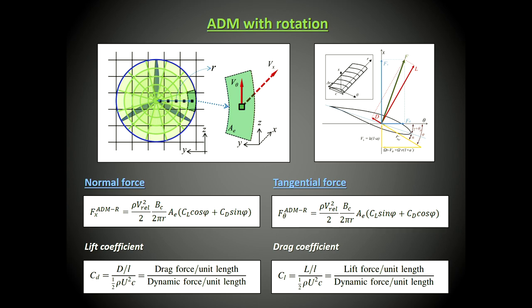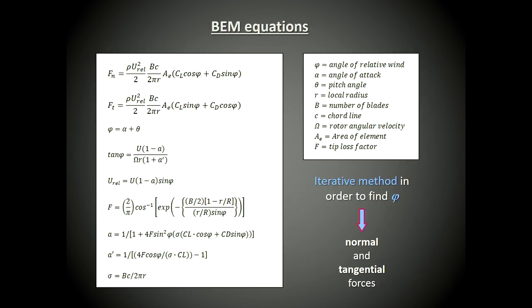The blade element momentum equations are these, and the normal and tangential forces are calculated through these formulas. They are functions of phi, the angle of relative wind, and also the relative velocity. The lift coefficient and drag coefficient are functions of phi.